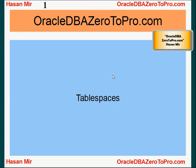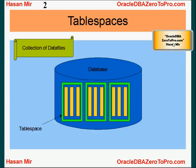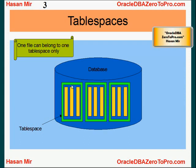Hello, welcome to OracleDBA02Pro.com, this is Hasan Mir. In this tutorial I'll talk about tablespaces. A tablespace is simply a collection of data files. For example, this tablespace is a group of three data files. Just remember that one data file can only belong to one tablespace — there's a one-to-many relationship between data files and tablespaces.